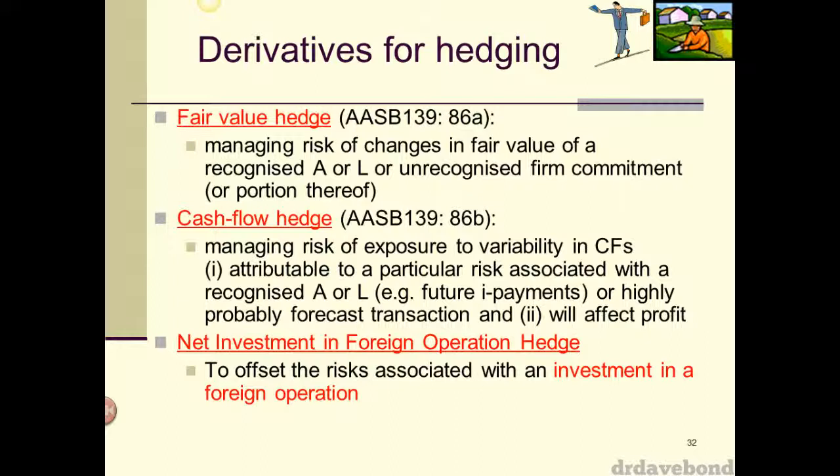There are three types of hedges that the standard identifies, but the two we want to look at are cash flow hedges and fair value hedges. For a fair value hedge, you have to have a recognized asset or liability which is moving around — for example, a foreign currency payable on your books, which will have changes in its fair value as the currency fluctuates.